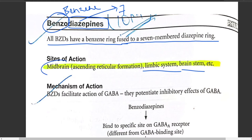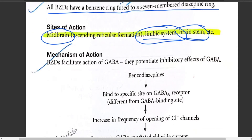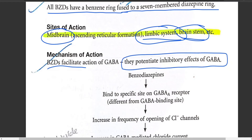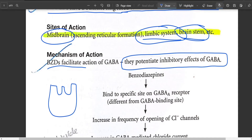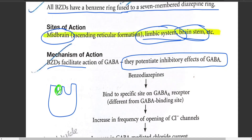Looking at the mechanism of action, benzodiazepines facilitate the action of GABA by potentiating its inhibitory effects. To understand this, imagine a receptor site where GABA receptors attach — GABA receptors are inhibitory neuronal receptors, i.e., inhibitory neurotransmitters.